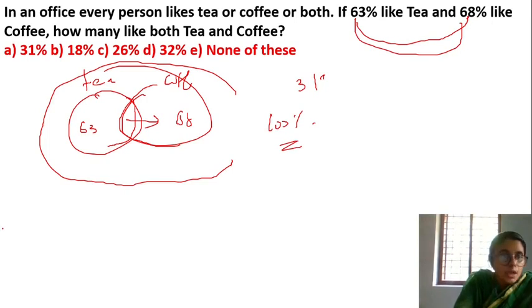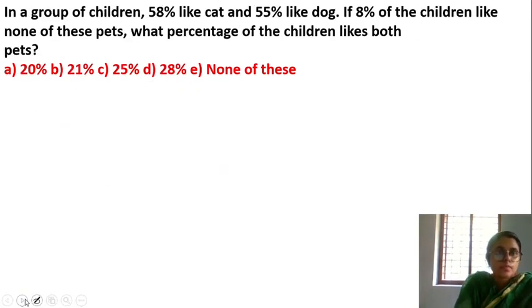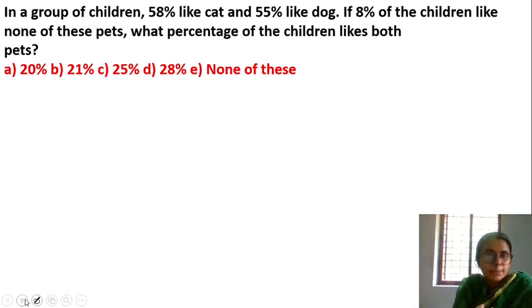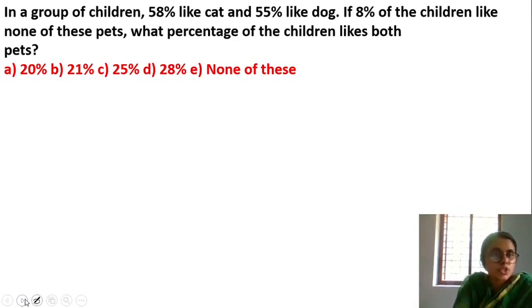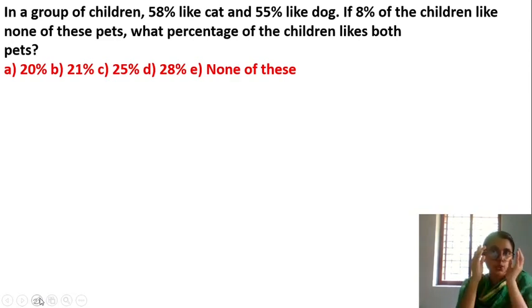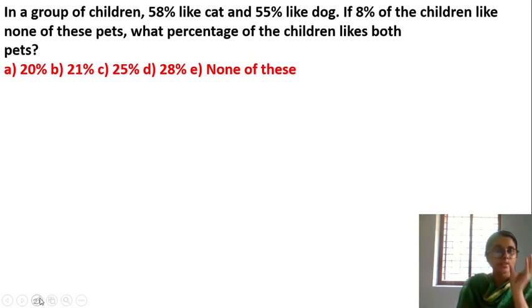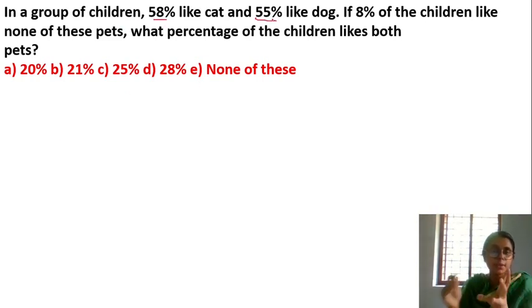Second question: In a group of children, 58% like cat and 55% like dog. If 8% of the children like none of the pets, what percentage of the children like both pets? Since 8% like none, the total who like at least one pet is 100 minus 8 equals 92%.